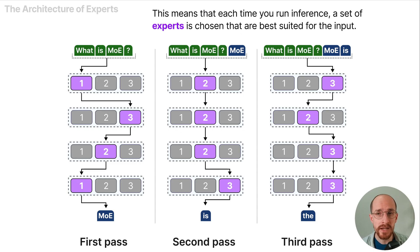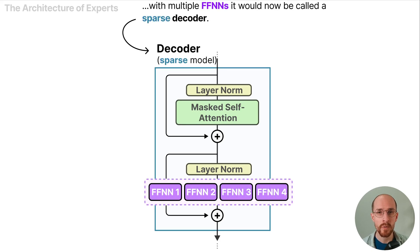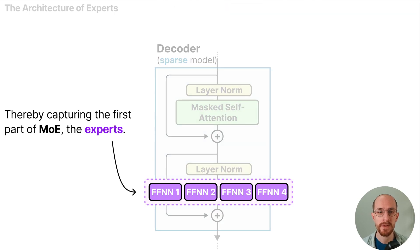Each new token may result in a different path and may activate a different set of experts. This means that each time you run inference a set of experts is chosen that are best suited for the input. If we update our visualization of the dense decoder with multiple feed forward neural networks it would now be called a sparse decoder, thereby capturing the first part of MoE which are the experts.